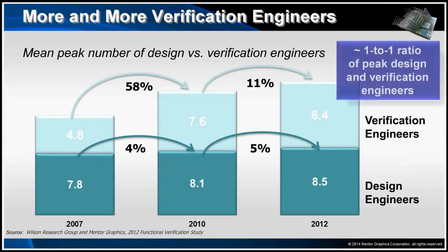The first data point I want to look at is the mean peak number of design and verification engineers involved on the project. You can see that there has been a small increase in the mean peak number of design engineers over the past five years. Keep in mind, the designs have continued to increase in size at a Moore's Law rate. The mean peak number of verification engineers between 2007 and 2012 increased significantly. In fact, today we see a ratio in terms of the mean peak verification engineers to design engineers of about one to one.